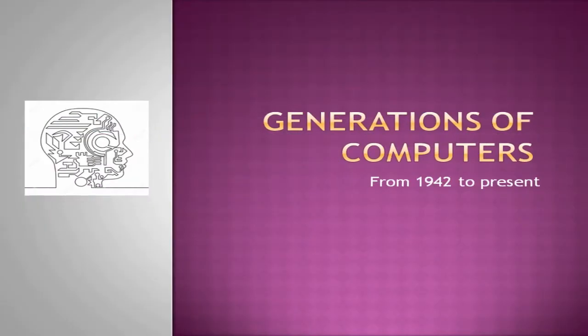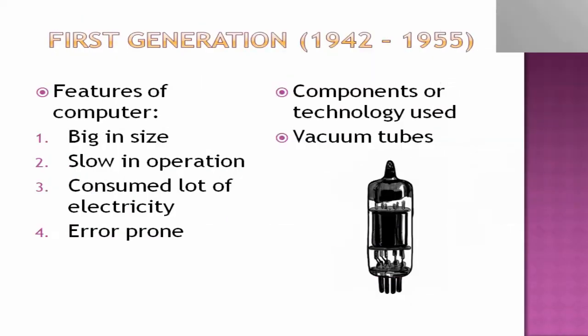Next comes Generations of Computer. Just as humans have generations, the development of computers also took place in distinct phases called generations. Each generation of computers is characterized by the use of a specific technology. We will see the generations of computers, their features, and the components used, from 1942 till the present. There are five generations of computer, and we are presently in the fifth generation.